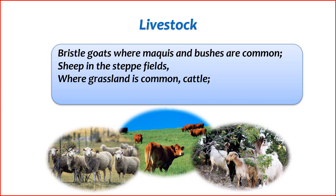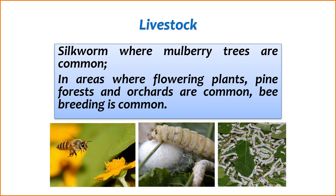The livestock preferences based on the type of vegetation in various regions are as follows. Bristle goats — preferred habitat: maquis in areas with bushes. Sheep — preferred habitat: steppe fields. Cattle — preferred habitat: grasslands. Silkworm breeding is prevalent in regions where mulberry trees are abundant, as these trees serve as the primary food source for silkworms. The relationship between silkworms and mulberry trees has been a traditional and economically significant practice, contributing to the production of silk.